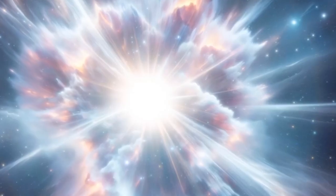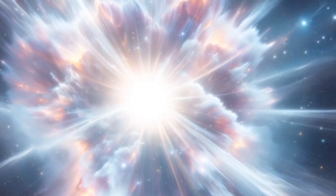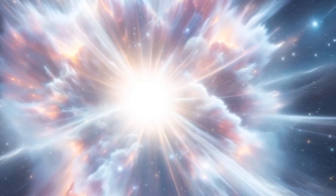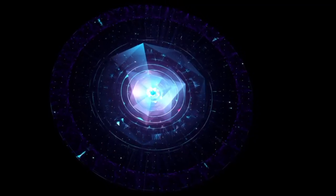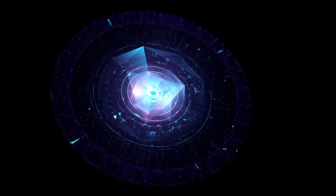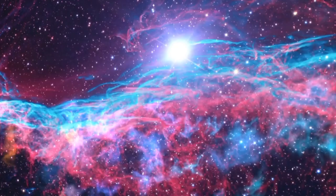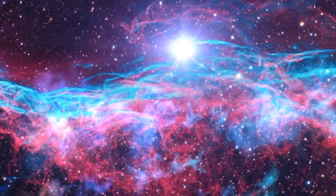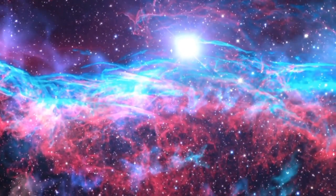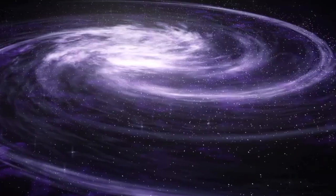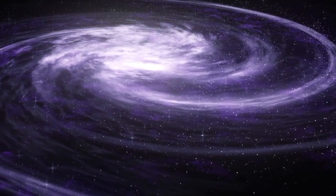But when Betelgeuse brightened once more after this unprecedented dimming, things became even more bewildering. Astrophysicist Andrea Dupree from the Harvard Smithsonian Center for Astrophysics noted that the star was now 150% brighter than usual, making it the seventh brightest star in the sky. Researchers were astonished to see a red glow emerging from the southern part of the star. The situation only became more puzzling.